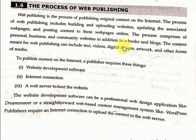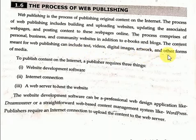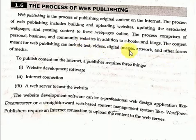The content meant for web publishing can include text, video, digital images, artwork and other forms of media. The content that we use in web publishing can also include text, videos, digital images, artwork and other forms of media.